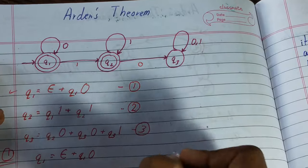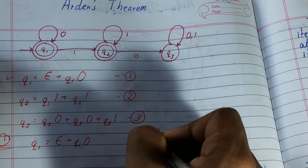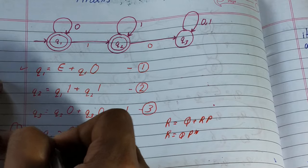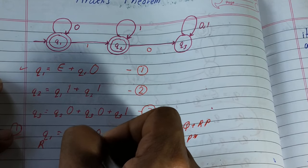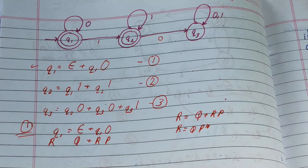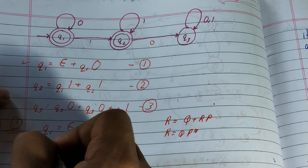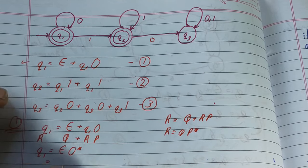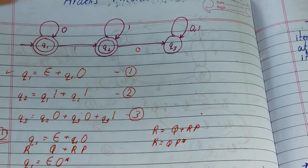Arden's theorem states that if R = Q + R·P, then the solution is R = Q·P*. We take R as q1, Q as null, and P as 0. So q1 = null·0* = 0*. For the first final state q1, the regular expression is 0*.